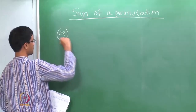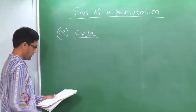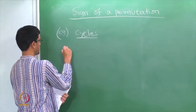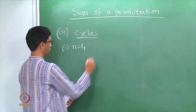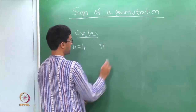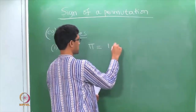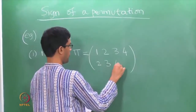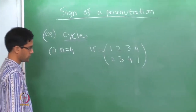Let us do a few more examples and find signs of cycles. Take n equals 4 and the permutation pi to be the cycle 1, 2, 3, 4. In two-line notation, 1 goes to 2, 2 goes to 3, 3 goes to 4, and 4 goes to 1.